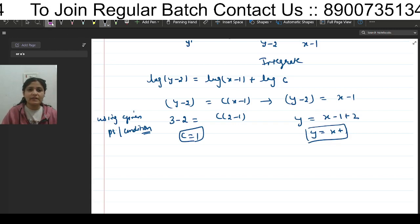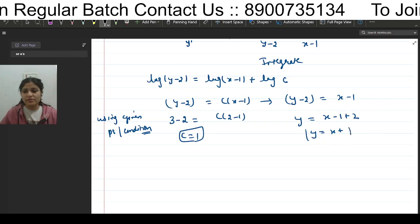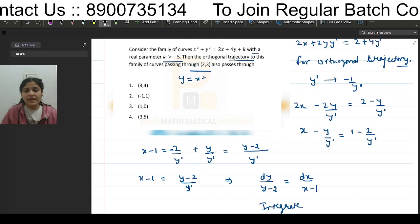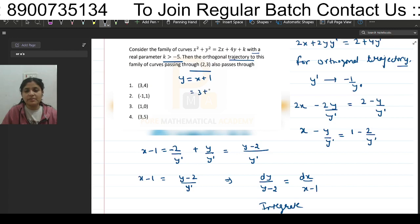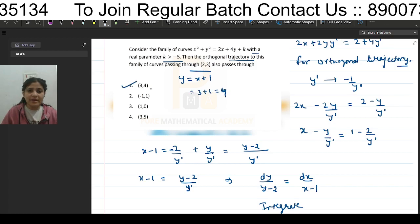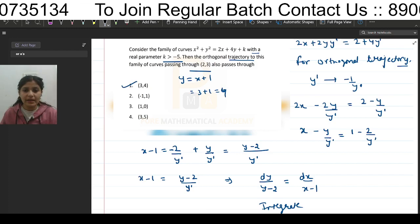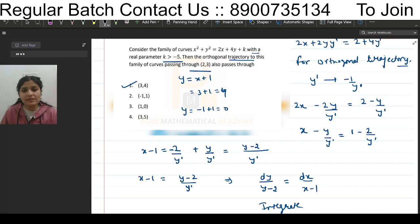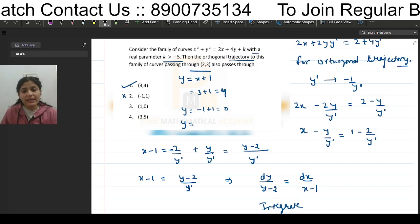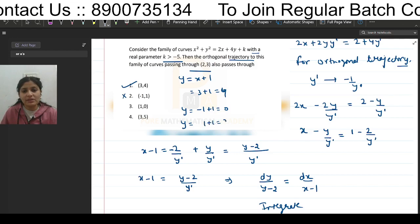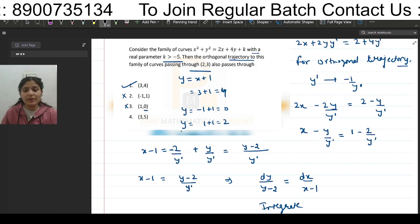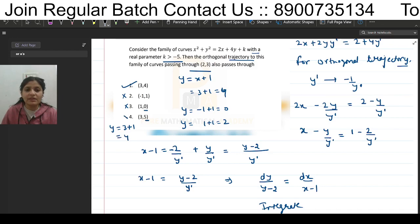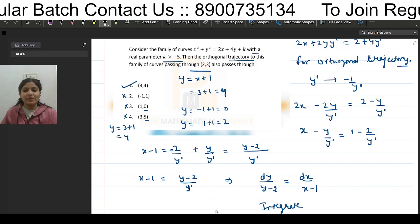Checking the four options against y = x + 1: Option 1, (3, 4): y = 3 + 1 = 4. Correct. Option 2, (-1, 1): y = -1 + 1 = 0, but y is given as 1. Discard. Option 3, (1, 0): y = 1 + 1 = 2, but y is 0. Discard. Option 4, (3, 5): y = 3 + 1 = 4, but y is 5. Discard. So the first option, (3, 4), is correct.